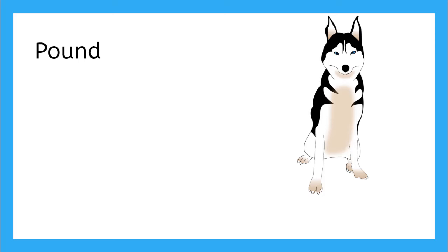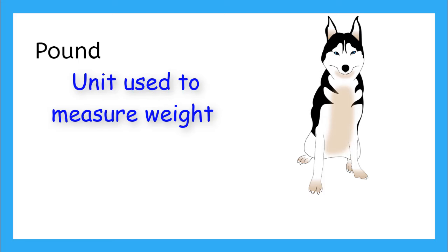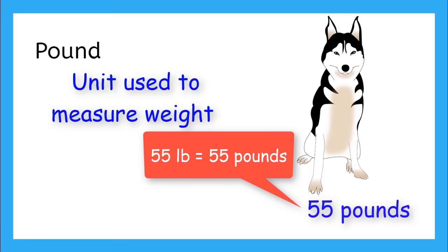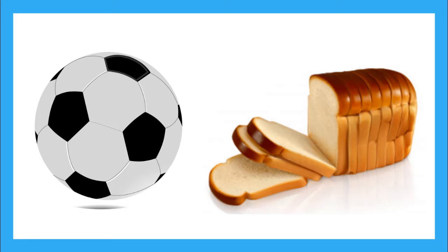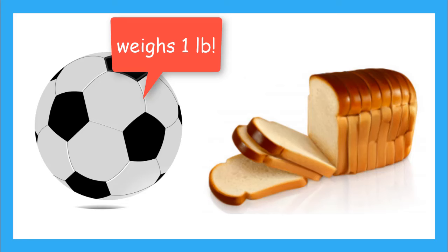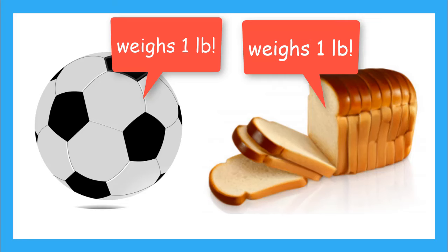Most of us have used or heard the word pound before. Pounds are a unit used to measure weight. For example, my dog weighs 55 pounds. Pounds is often abbreviated to LB for short. But how much is just one pound? A soccer ball is about one pound and a loaf of sandwich bread is about one pound.